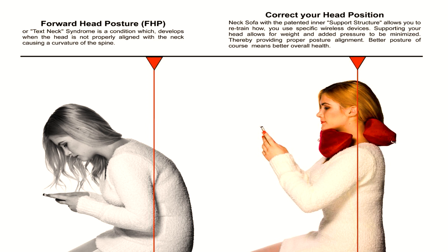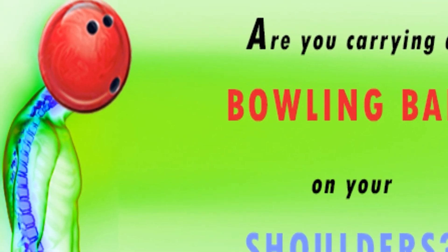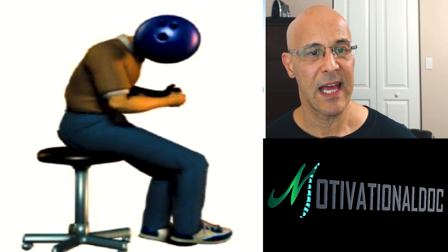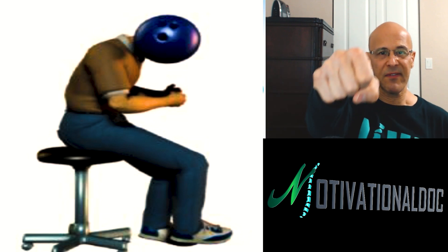Forward head posture is a major issue — remember that head weighs 12 pounds. To illustrate, think of carrying a bowling ball. Many people have gone bowling and know how heavy those balls can be. If you're sitting with a bowling ball on your head, you can't hold it out in front of you for more than a couple of seconds. Now imagine your head with that bowling ball weight going forward like this.